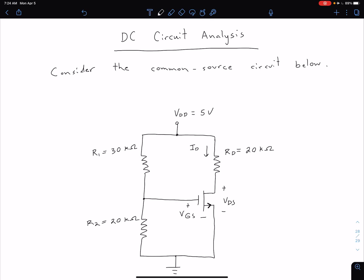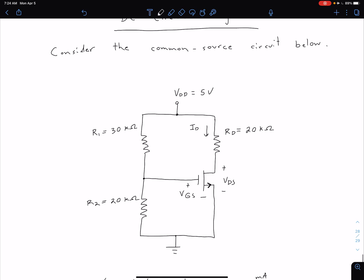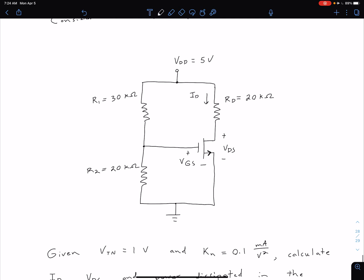We're now ready to do some DC circuit analysis on our MOSFET circuits. Let's start by considering this common source circuit shown below. We can note that this is a common source circuit because our source terminal, which is the one with the arrow coming out of it, is connected to our ground.